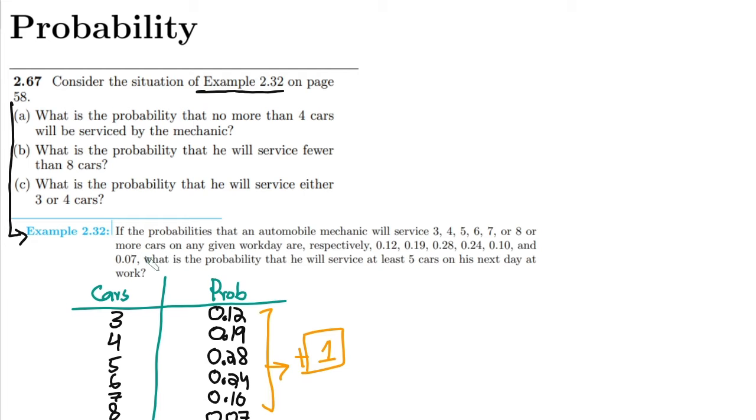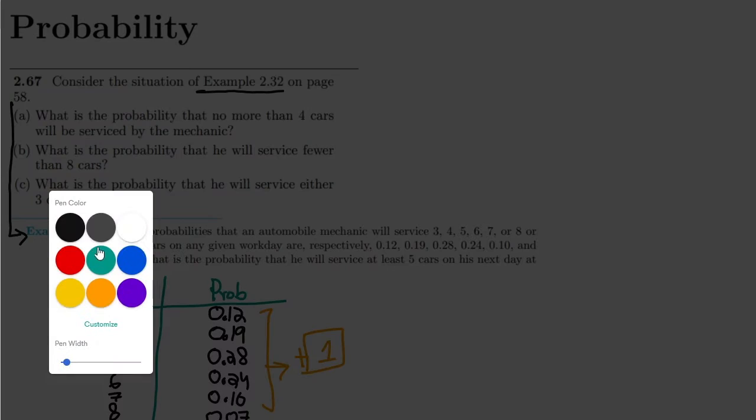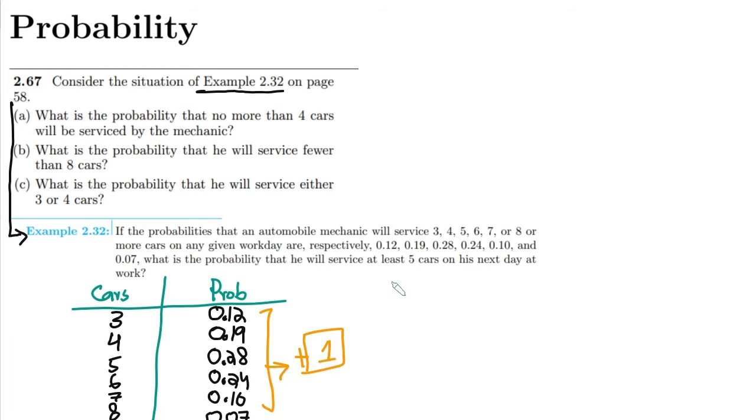On the basis of it what do I have to find out here? That is the question or example here. Let me first find the solution of this example and let me tell you what is inherent in it. What is the probability that he will serve at least 5 cars on his next day at work?